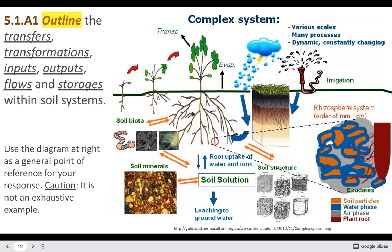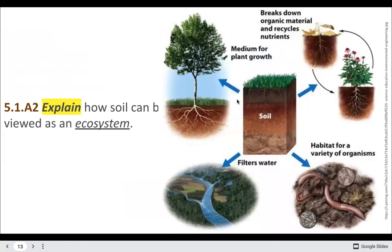Some applications and skills include outlining the transfers, transformations, inputs, outputs, flows, and storages within soil systems. A classic example is outlining decomposition and leaching in the A horizon: decomposition from dead plants above brings material into the A horizon, and leaching from excess rain draws material away from the A horizon — drawing those arrows with labels gets you full marks.